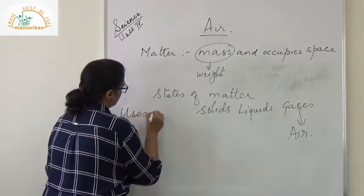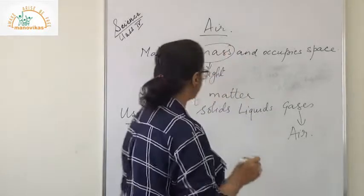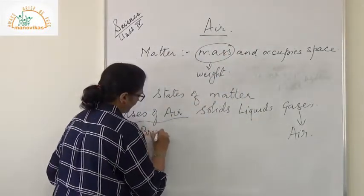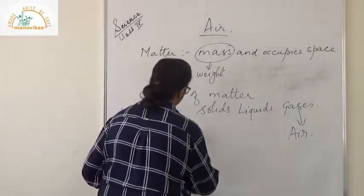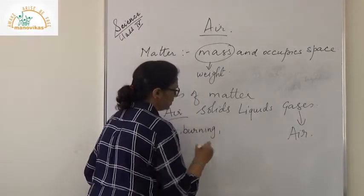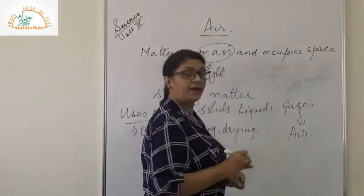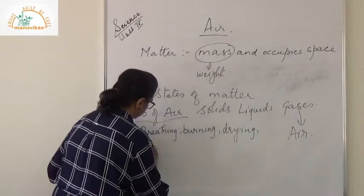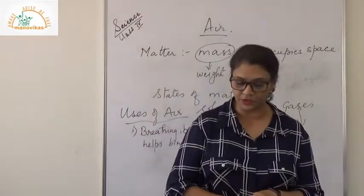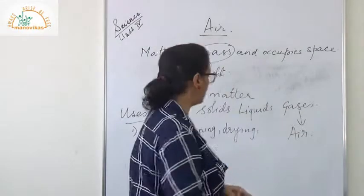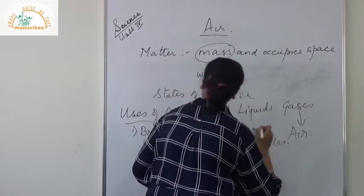Air is used for breathing. All living beings need air. Air is required for breathing. Air is also required for burning. Air dries clothes. Air helps the birds to fly. Air is used in tires of vehicles.